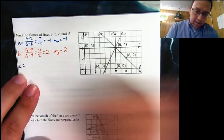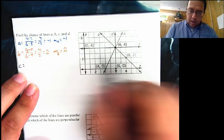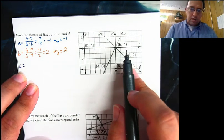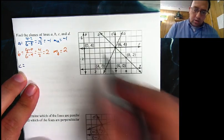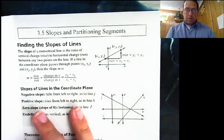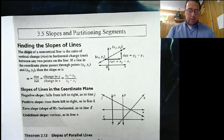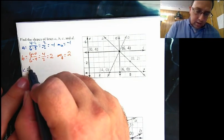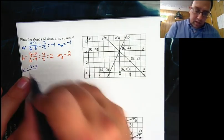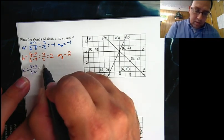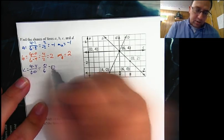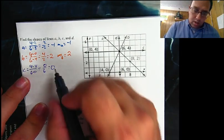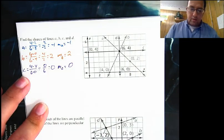Now let's take a look at line C. I can see this is following my grid lines — this is horizontal. I don't have to do anything. The horizontal slope, as we saw on the first page, is 0. But I'll go ahead and do it: change in Ys, I have 4 minus 4 over change in Xs, 6 minus 0. So I have 0 divided by 6, which is 0, because it's horizontal. So the slope of line C is 0.